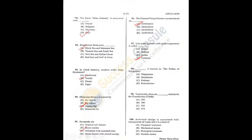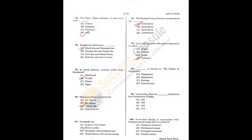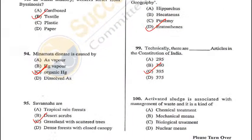Question 98: Who is known as the father of geography? The answer is D. Question 99: Technically there are how many articles in the Constitution of India? When the Constitution was adopted, it had 395 articles divided into 22 parts and 9 schedules — C is the correct answer. Question 100: Activated sludge is associated with management of waste — it is a kind of biological treatment — C is the correct answer.